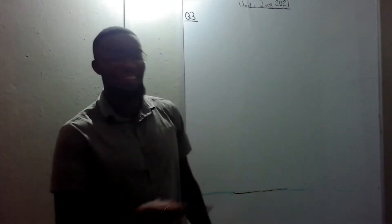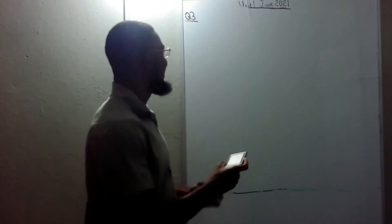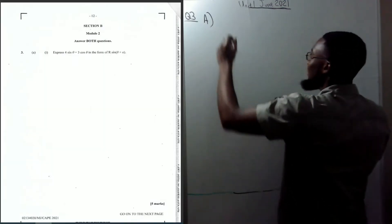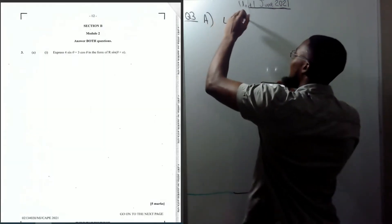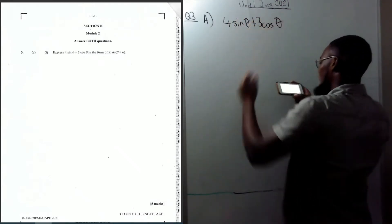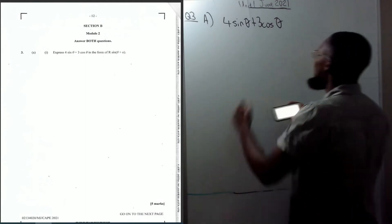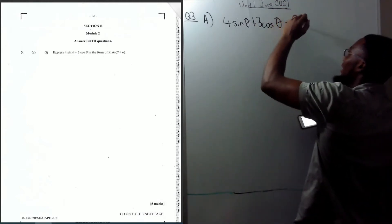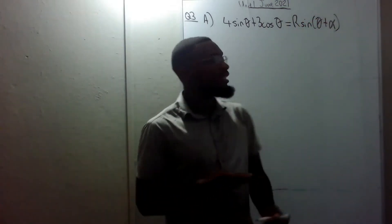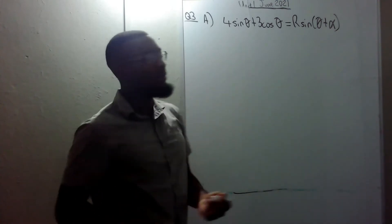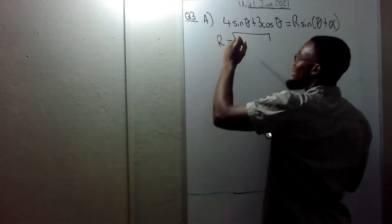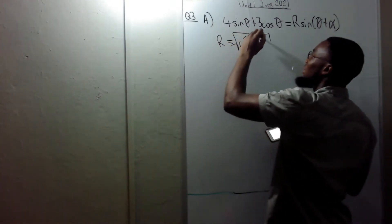We're back and looking at question 3. It says express 4sinθ + 3cosθ in the form r·sin(θ + α). All we need to do is remember the formula: r is equal to the square root of a² + b², so it's √(4² + 3²).